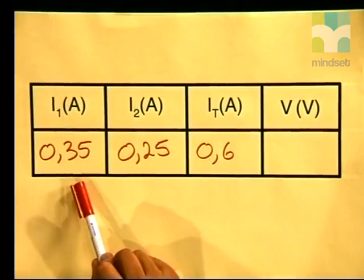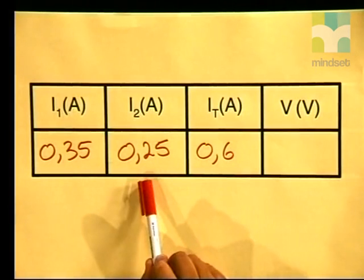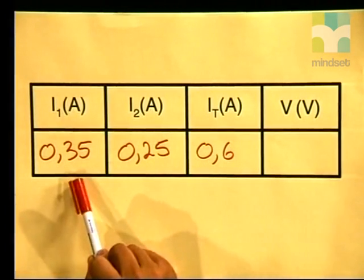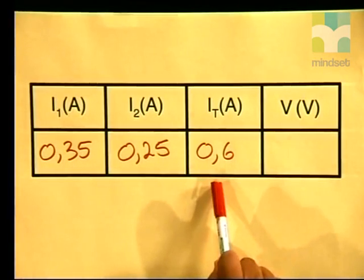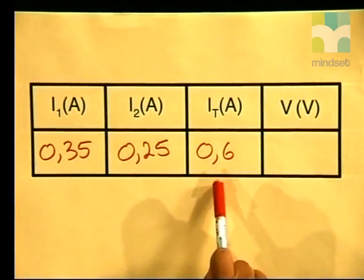Now that we've collected readings for current in the circuit, let's see what these readings actually tell us. Do you see that the current that passes through each branch is very different? A greater current passes through branch 1, which has a lower resistance than branch 2. The greatest current passes through the ammeter, which is measuring the current supplied by the battery of cells.